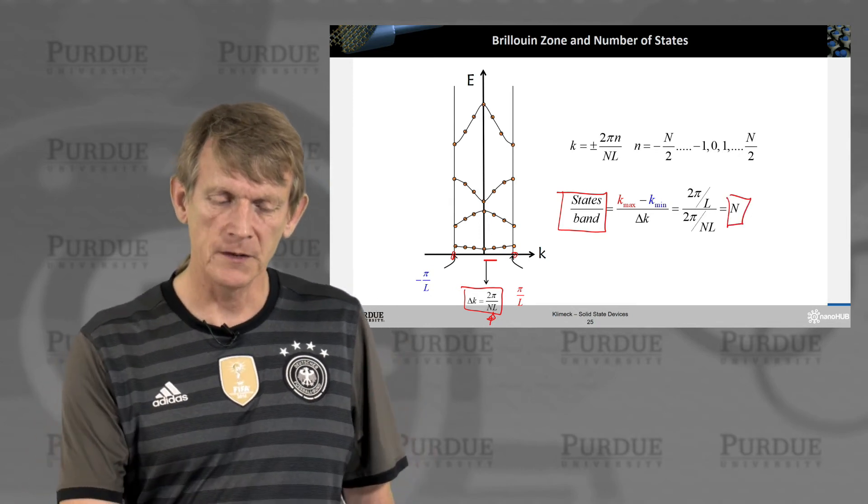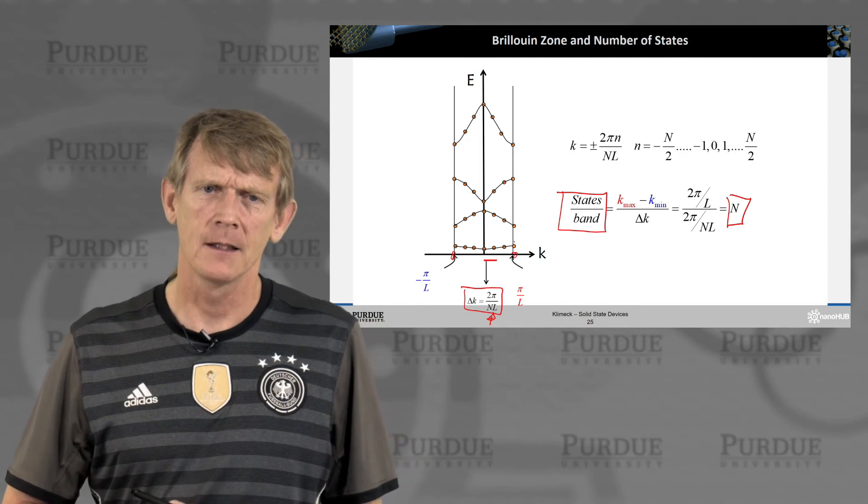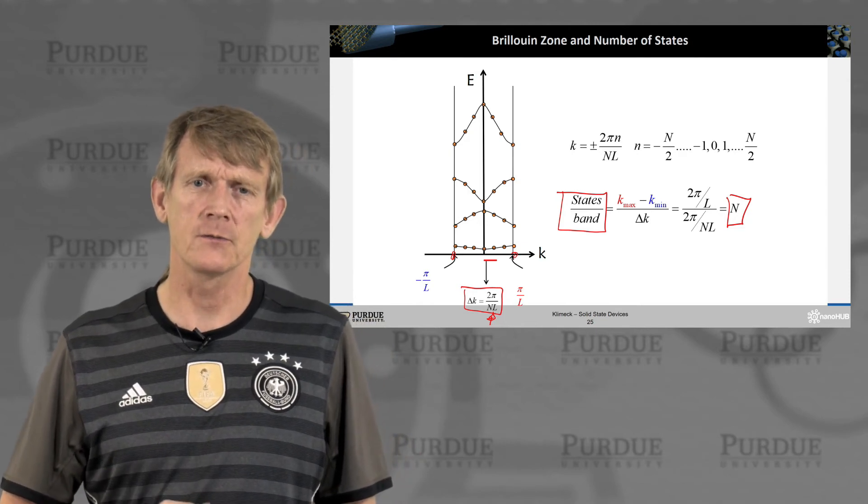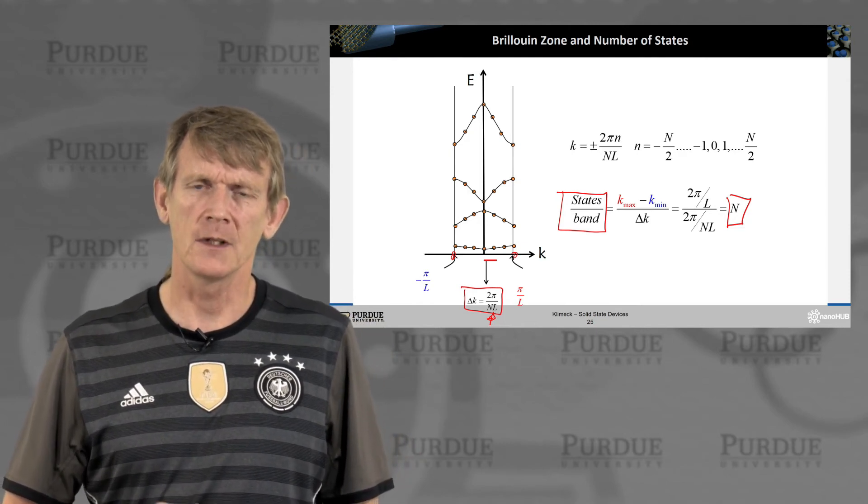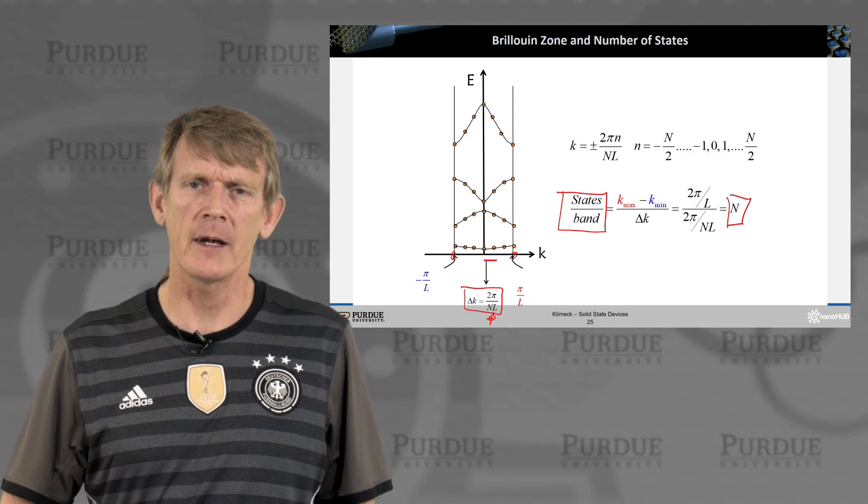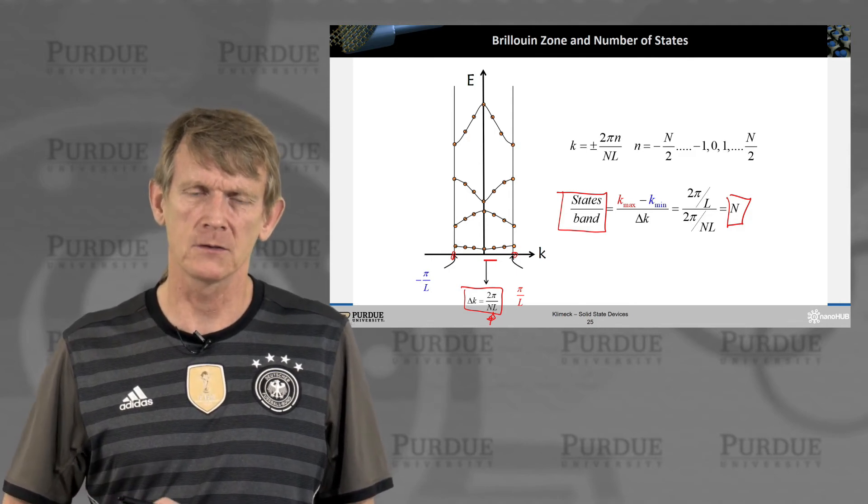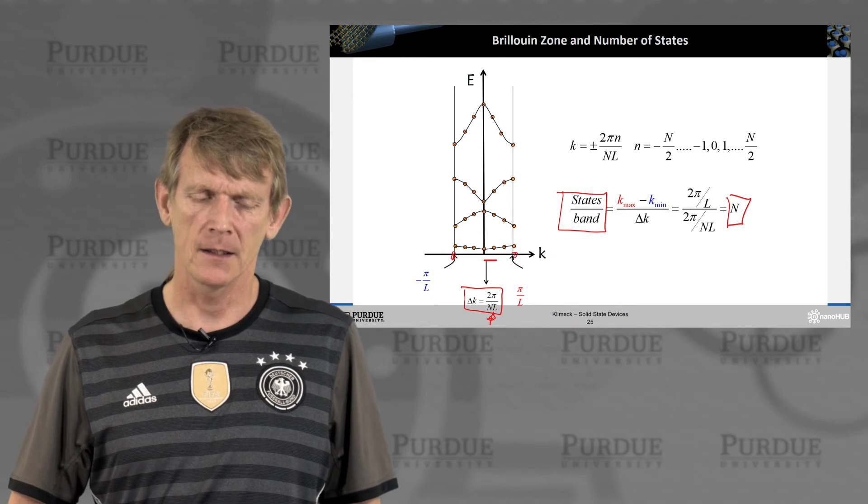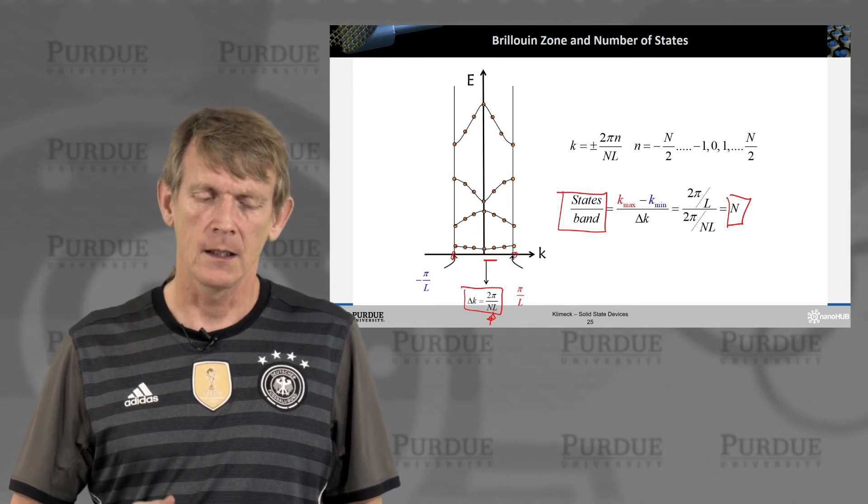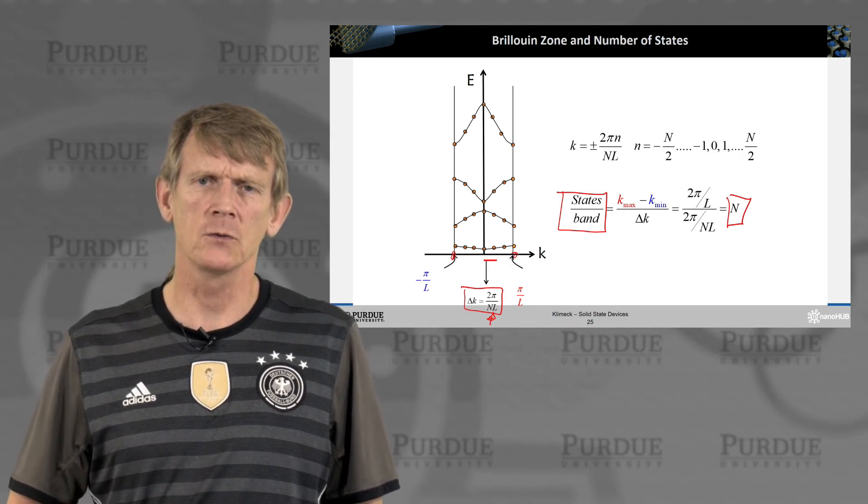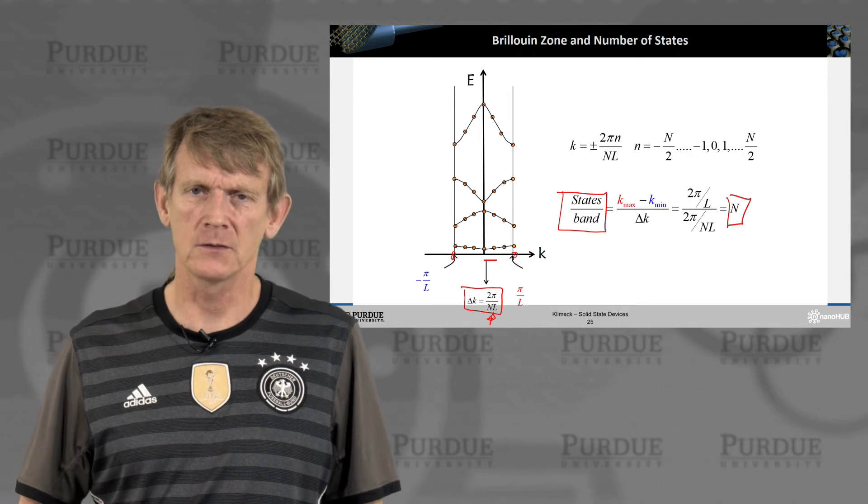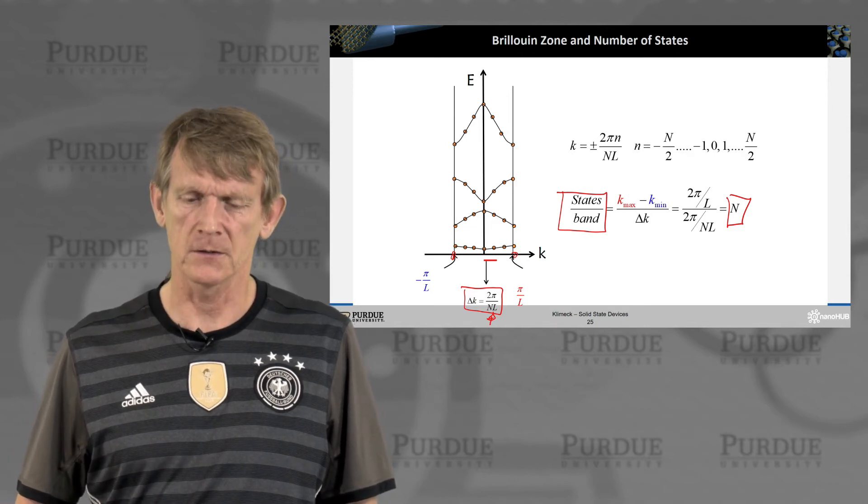So the number of discrete points that you consider in this band is capital N, which is this fictitious number of repeated cells. So you can make this any number you want, assume that it's large, and you come from a few discrete points to many discrete points to a quasi-infinite number of discrete points.